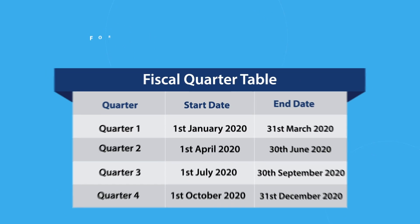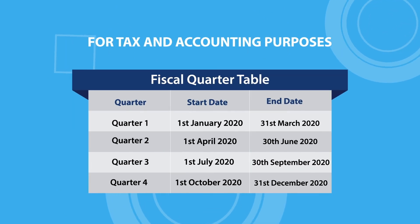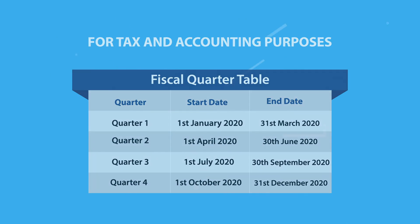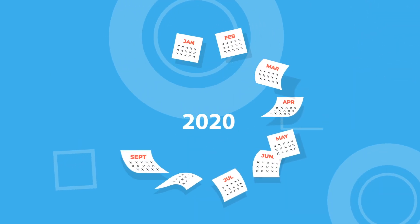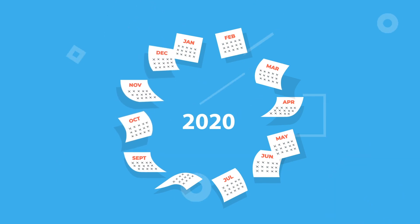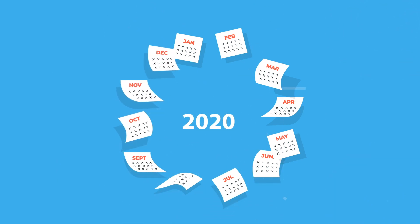A fiscal quarter is one-fourth of a fiscal year, which is a defined 12-month period for tax and accounting purposes. For most businesses, the fiscal year starts on January 1st and ends on December 31st. However, some businesses begin and end their fiscal year on different dates.